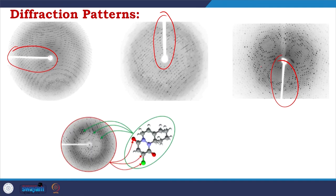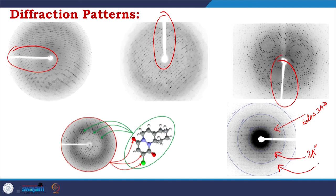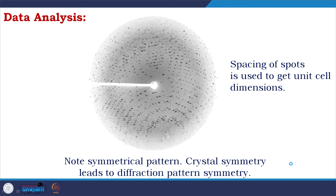When you have the diffraction pattern, you start data analysis. You will get circles which tell you what resolutions you get data at. Lower resolution gives denser spots — you get denser spots below 3 Ångström, then at 3 Ångström you get a good amount, and in the range of 2 Ångström you get fewer spots. Less than 2 Ångström, which is actually higher resolution, gives even smaller spots. Crystal symmetry leads to diffraction pattern symmetry, and spacing of spots is used to get unit cell dimensions.